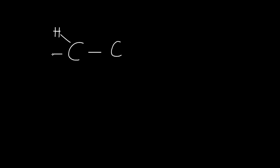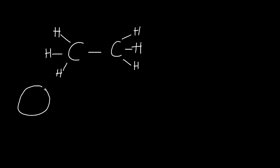Now let's say we have the same two-carbon molecule and we need to draw the Newman projection. We draw a circle, and what goes in the middle is the first carbon — those on the outside represent the second carbon. We always start with the first carbon. There is something called the front carbon and the back carbon: carbon one is the front carbon and carbon two is the back carbon. Carbon one is right in the middle because it's in the front.